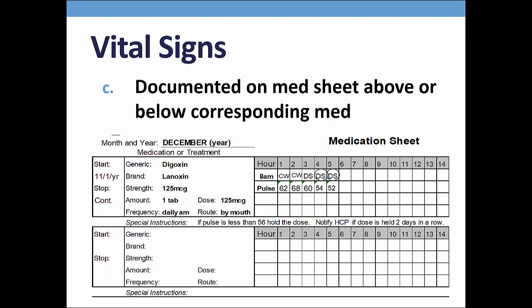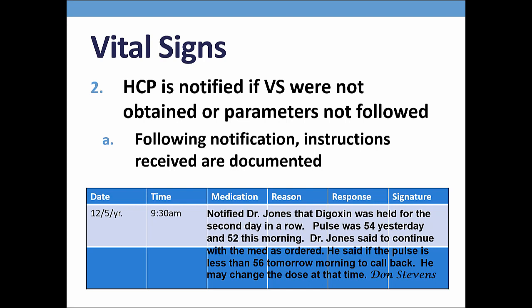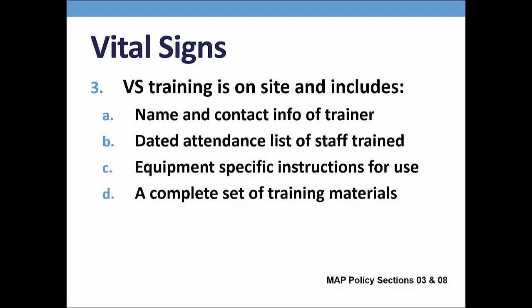When the vital sign is outside of the ordered parameters, staff must write a corresponding med progress note explaining the issue and who is notified. Looking at this medication progress note, you can see how staff documented what happened, that the HCP was notified, and what they are expected to do next. Also notice that staff wrote through all of the boxes and columns; staff should use as many lines as needed to write a thorough note. A nurse, HCP, pharmacist, paramedic, or EMT can provide the vital signs training.